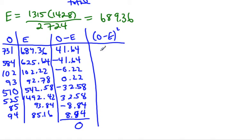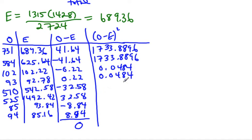The top number squared is 1733.8896. The next one will also be 1733.8896. The next one is 0.0484, and so is the one after that. The next one is 1061.4564, and also 1061.4564. And the last two are 78.1456 and 78.1456.